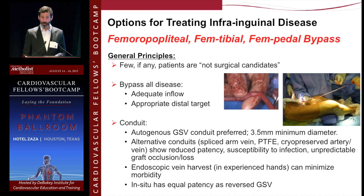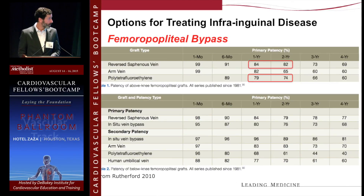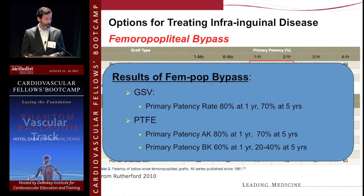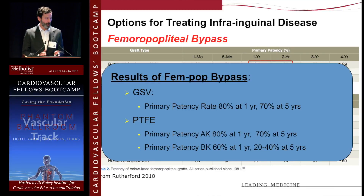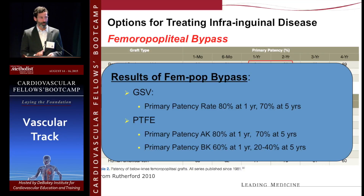Endoscopic vein harvest in experienced hands can have equal patency with minimal morbidity, and in-situ technique can also limit morbidity with equal patency results. Greater saphenous vein has a primary patency rate greater than 80% at one year, even up to 70% to 80% at five years — this is the gold standard benchmark we must compare all interventions against. PTFE has essentially equal patency rates above the knee as saphenous vein. Below the knee, patency tapers off; before heparin-bonded PTFE (Propaten) was widely used, the accepted primary patency below the knee dropped to about 60% at one year and much lower long term.